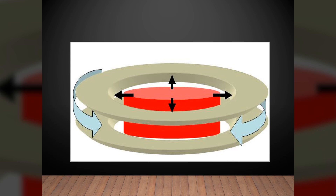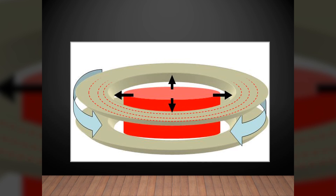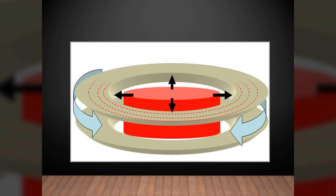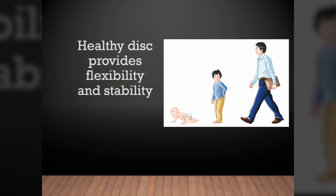Spinal compression generates hydrostatic pressure in the nucleus pulposus. Increased pressure expands the nucleus pulposus horizontally, expanding the annulus and raising its tension. Thereby, the combination forces of nucleus pulposus and annulus fibrosus work together to resist the applied load. By these biomechanics, healthy discs provide flexibility and stability to the spine.